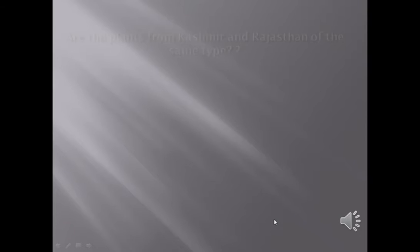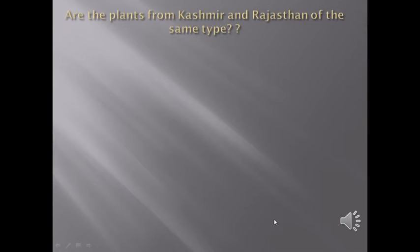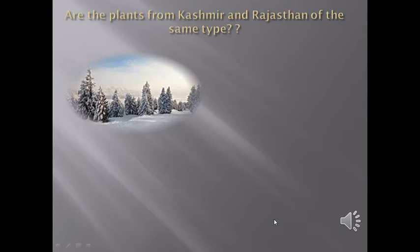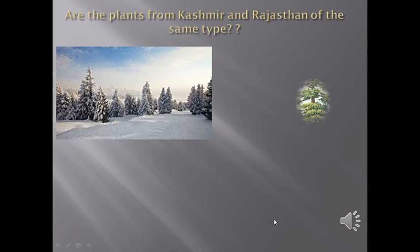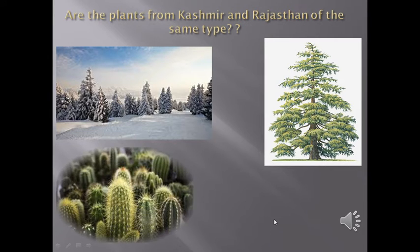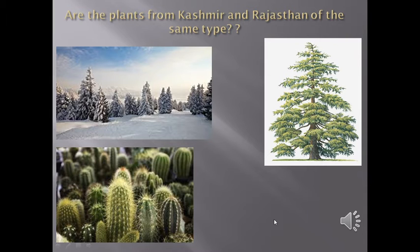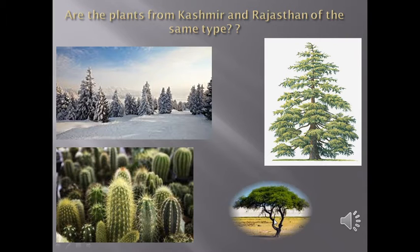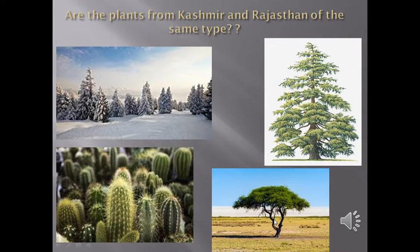Let us consider a few more examples of this diversity. Are the plants from Kashmir and Rajasthan of the same type? Coniferous trees like pine and deodar flourish in snowy regions like Kashmir. However, in the deserts of Rajasthan, plants like cactus and acacia are to be found.